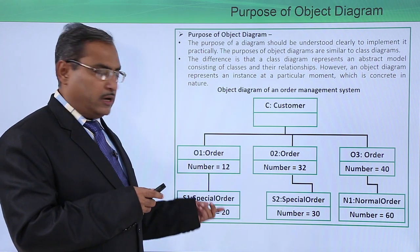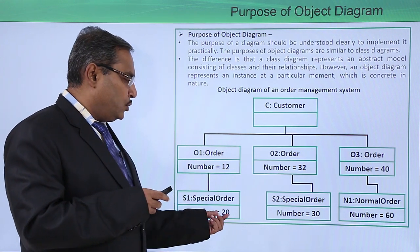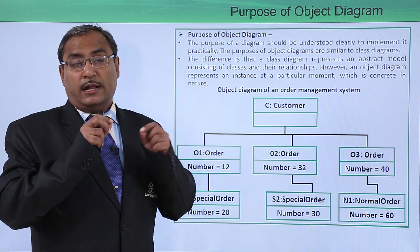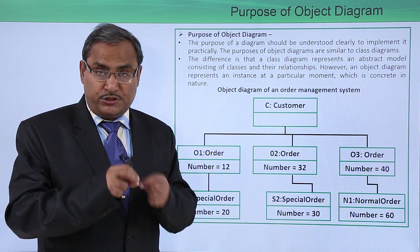These respective concrete classes are having number equal to 20, number equal to 30, and number equal to 60. So they have got instantiated.